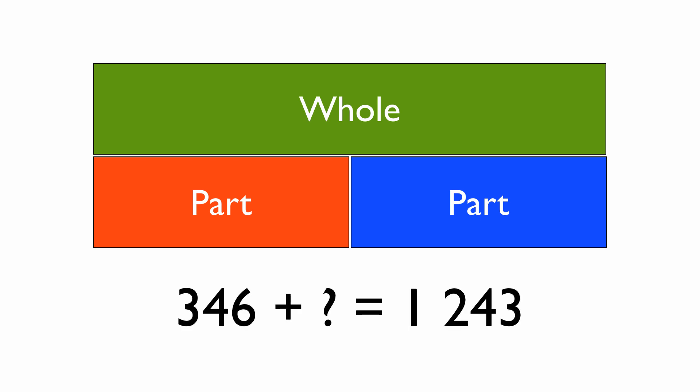This is exactly the same sum as before except that instead of using little numbers I'm now using big numbers. As before, I've got a total 1,243 and I've got two parts: 346 which I know, and the blue part which I'm trying to solve.